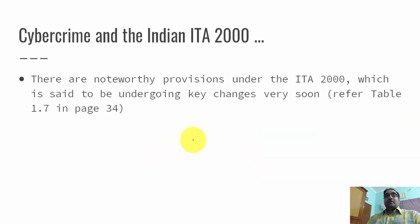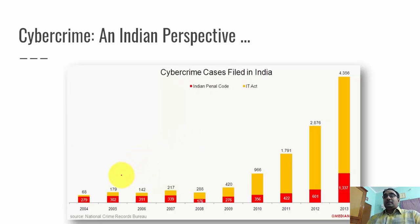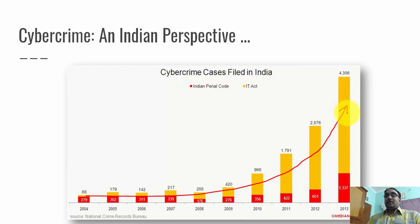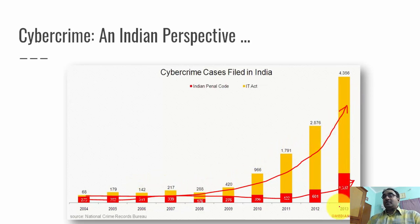The ITA 2000 was updated in 2008. The included picture shows the number of cases booked under IPC and ITA — yellow bars represent cases registered under ITA, and red bars represent cases registered under IPC. You can see the number of cases are increasing exponentially, and this data is only from 2013 onwards, so you can assume the numbers continuing to increase.